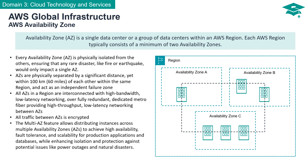AWS's multi-AZ feature empowers you to spread your instances across multiple availability zones. This distribution fosters high availability, fault tolerance, and scalability for your applications and databases. In essence, it's a strategic move to enhance isolation and safeguard against potential issues like power outages and natural disasters.